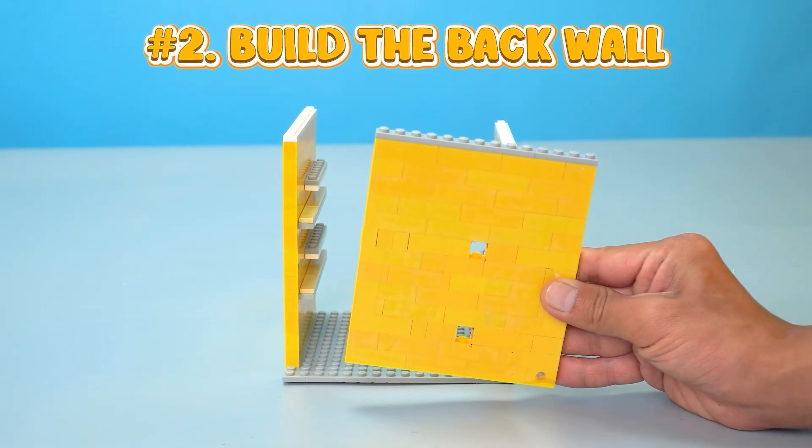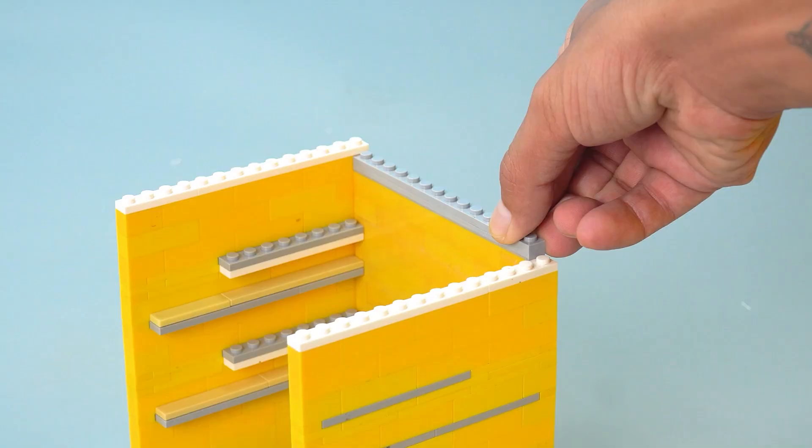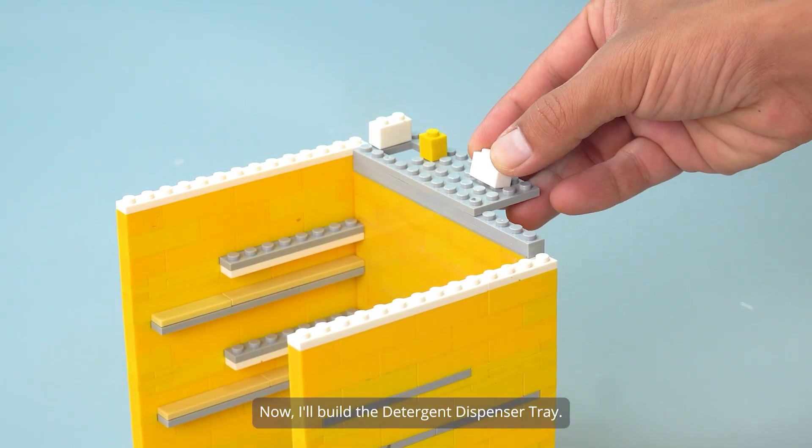Number 2, build the back wall. Now I'll build the detergent dispenser tray.